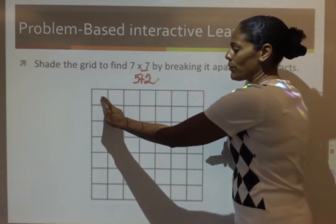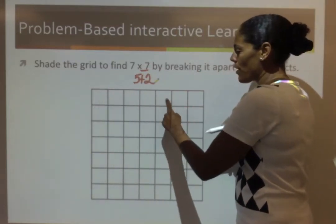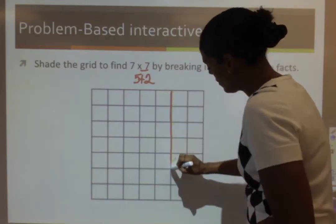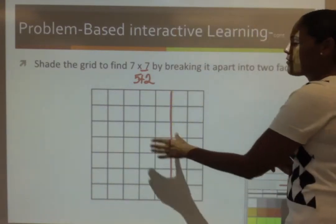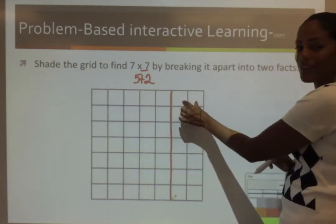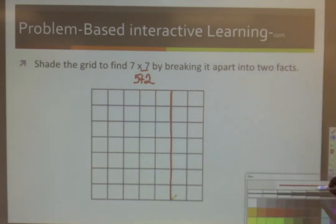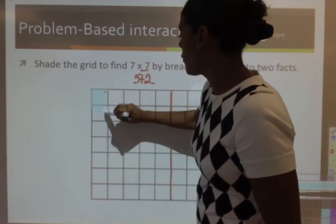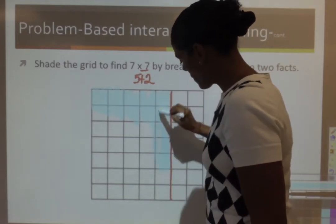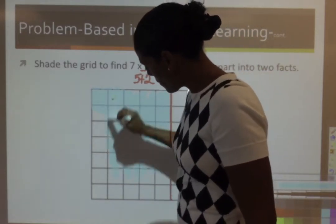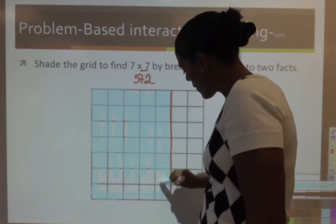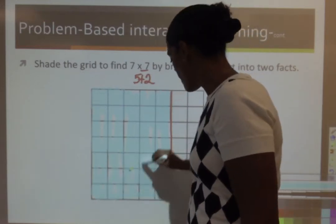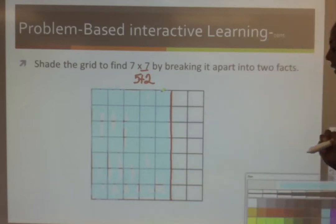So, that means that I would need to count over 5. 1, 2, 3, 4, 5. Right here. So, I'm going to get 5 columns on this side and then 2 on this side. So, I'm going to go ahead and I'm going to shade my 5 on that side.